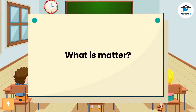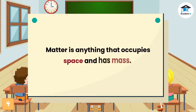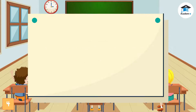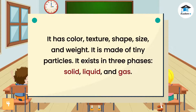What is matter? Matter is anything that occupies space and has mass. It has color, texture, shape, size, and weight. It is made of tiny particles. It exists in three phases: solid, liquid, and gas.